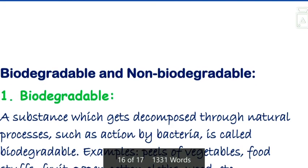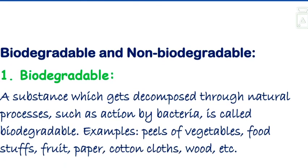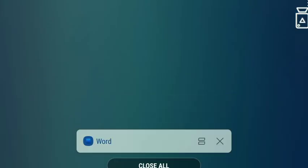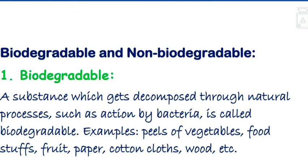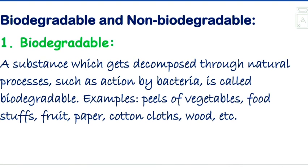Next topic: biodegradable and non-biodegradable. Substances are of two types: biodegradable and non-biodegradable. Biodegradable substances are those which are decomposed easily — substances which get decomposed through natural processes, such as the action of bacteria.